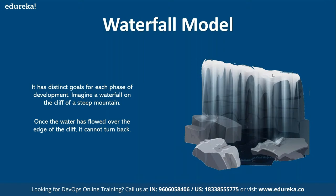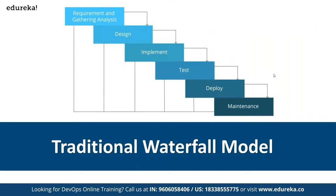In the waterfall model, the first point of contact is the business analyst, who interacts with the customer and gathers requirements. Once requirements are gathered, they pass to the design or architect team. Based on the requirement, they design the solution to deliver to the customer. Once architecture is complete, it goes to the implementation or coding team, who codes the solution based on the proposed architecture.